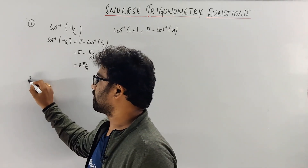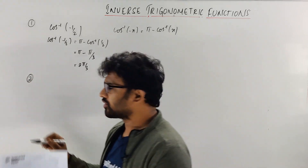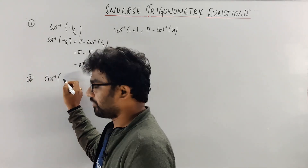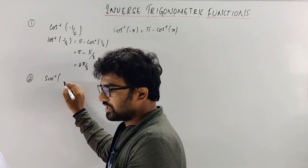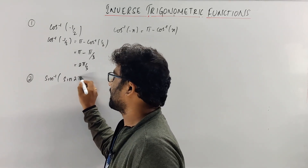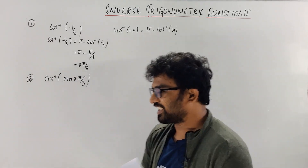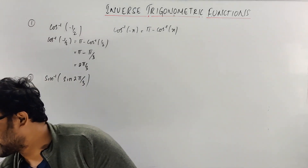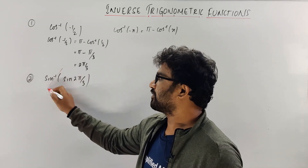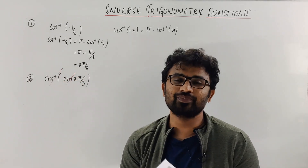Next, second question. Let's take one more question. Imagine the question is: find sin⁻¹(sin(2π/3)). Now, many students ask: can I just cancel sin⁻¹ and sin? Because many times we do cancel sin⁻¹ directly. But I clearly explained that — there is something called restricting domain.